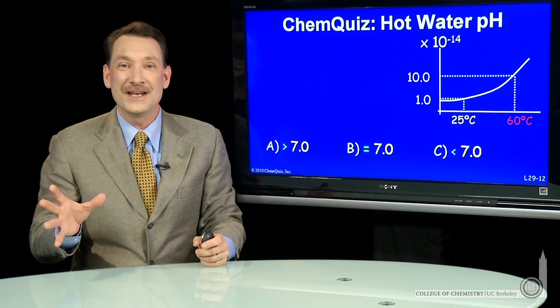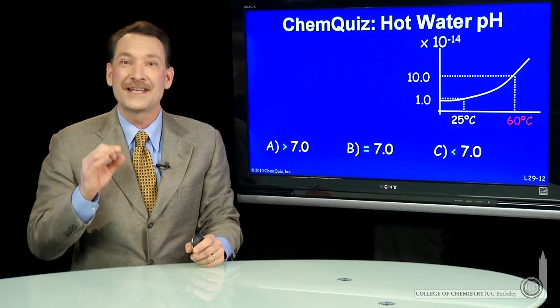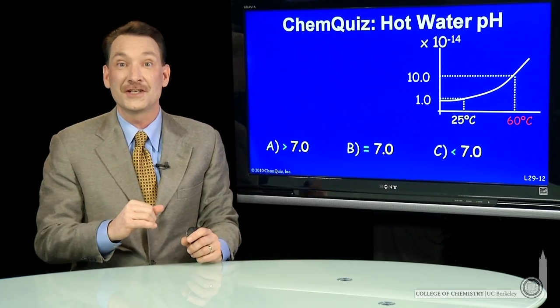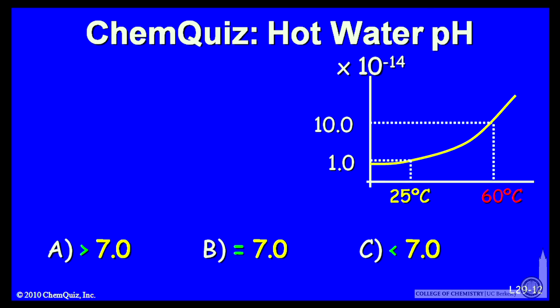We're talking about the pH of hot water based on Kw for water, the autodissociation constant. I have it plotted here. As the temperature increases, Kw increases.